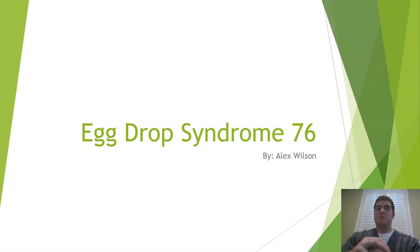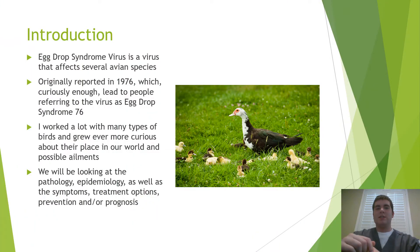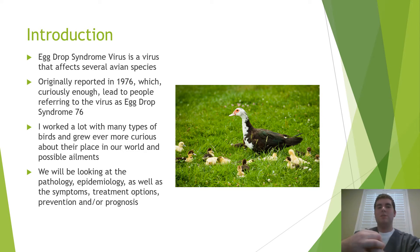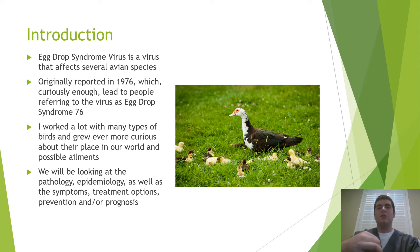Hello, my name is Alex Wilson, and today we'll be discussing a little bit about egg drop syndrome virus. As the name implies, egg drop syndrome virus is a virus that affects avian species and was originally discovered in 1976, which coincidentally led to people referring to the virus as egg drop syndrome 76.